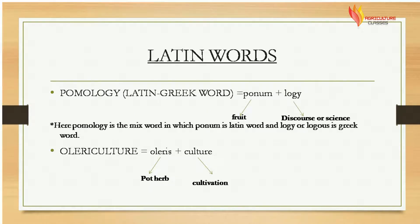Next word is pomology. The word pomology contains both Latin and Greek words. The Latin word pomum means fruit and the Greek word logi means discourse or science. Next word is olericulture, made from oleras and cultura. Oleras refers to pot herb and cultura refers to cultivation.